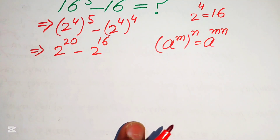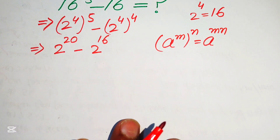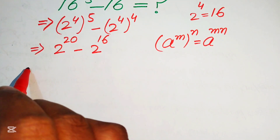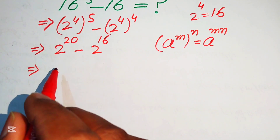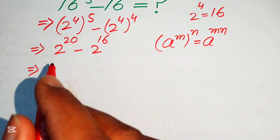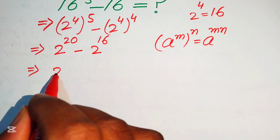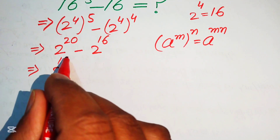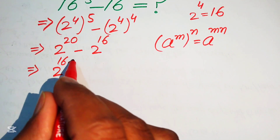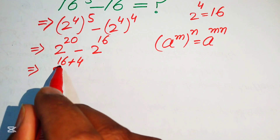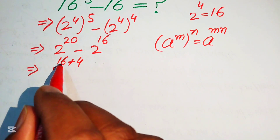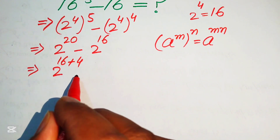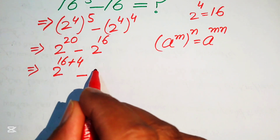Next we break 2 to the power of 20 by writing the exponent 20 as 16 plus 4. So we have 2 to the power of 16 plus 4, minus 2 to the power of 16.